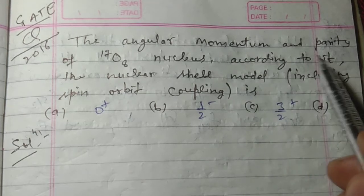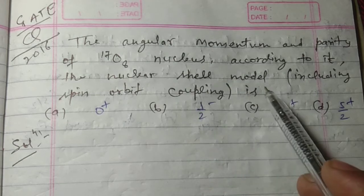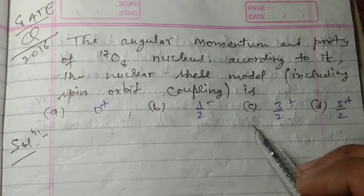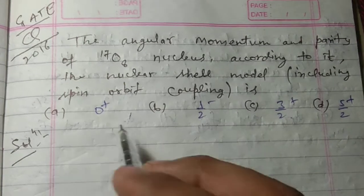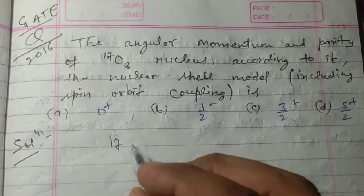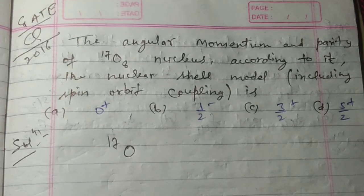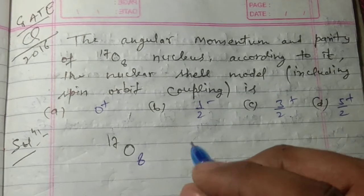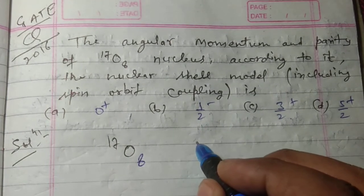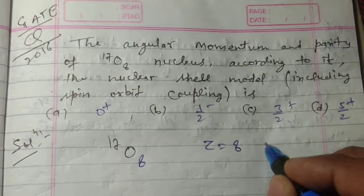Here the given nucleus is O-17 (Oxygen-17). Therefore, the number of protons Z equals 8, which is even.